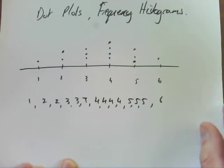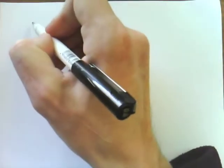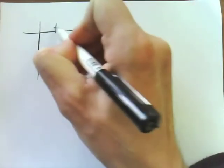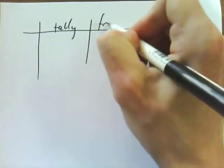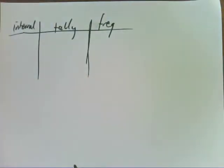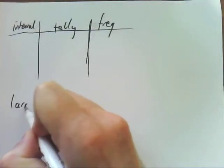For frequency histograms, they're slightly different. For them, you need a table. And those tables, the easiest way to draw them is something like that. So your frequency table will look something like that, and you use these for large sets of data.